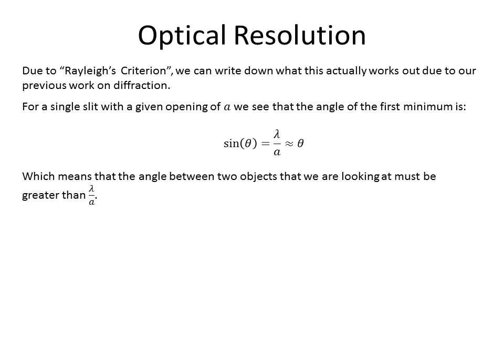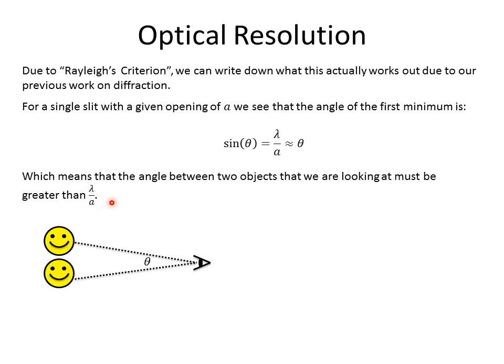If we have a smiley face up here and a second smiley face down there, the angle that we see as an observer has to be greater than lambda over a. If it's not, we won't be able to see the difference.